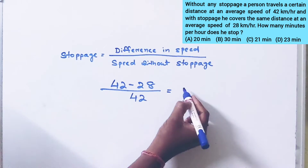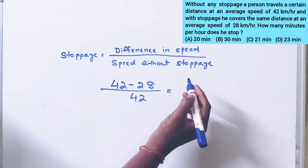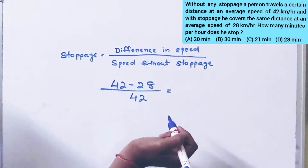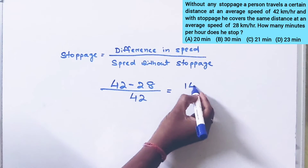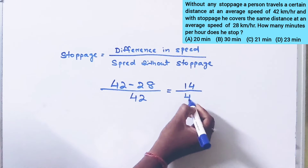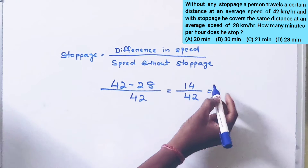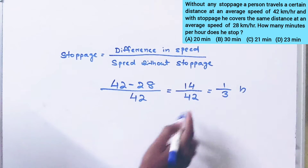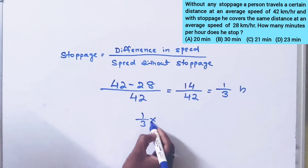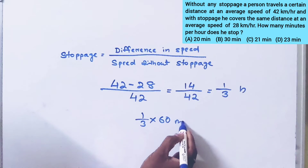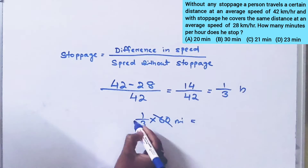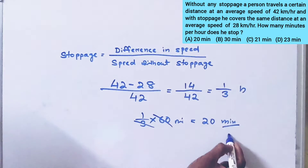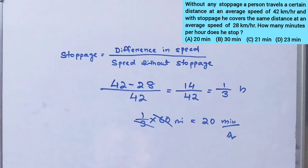42 minus 28 is equal to 14, divided by 42, which equals 1/3 hour. Converting 1/3 hour into minutes: 1/3 into 60 minutes equals 20 minutes. So the stoppage per hour is 20 minutes.